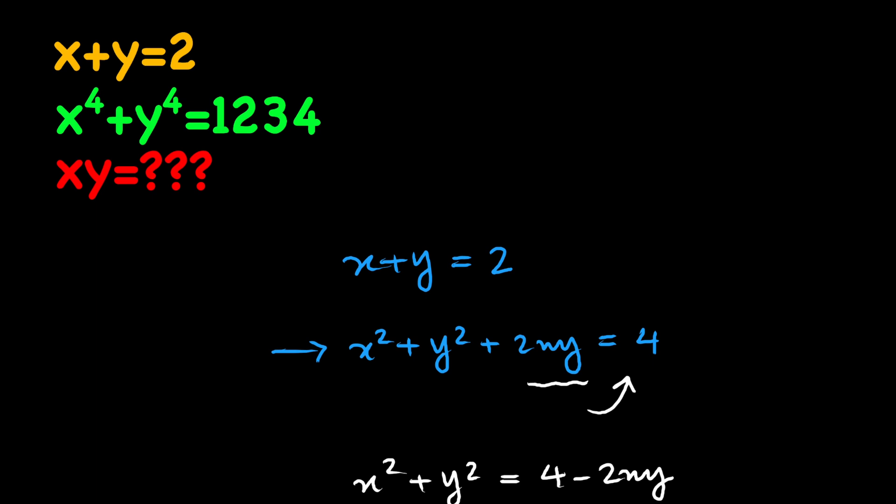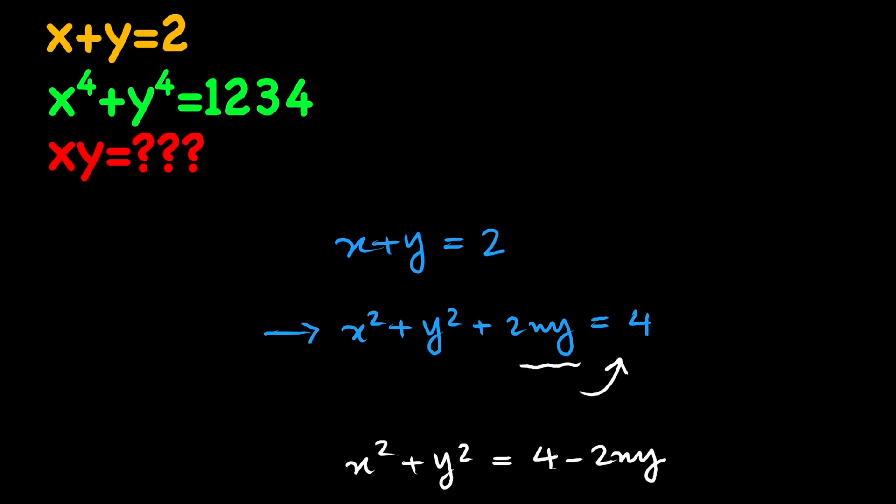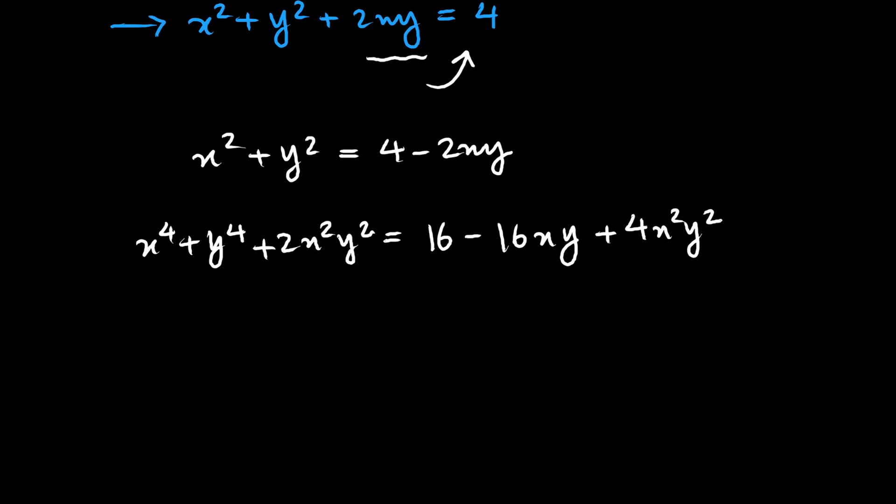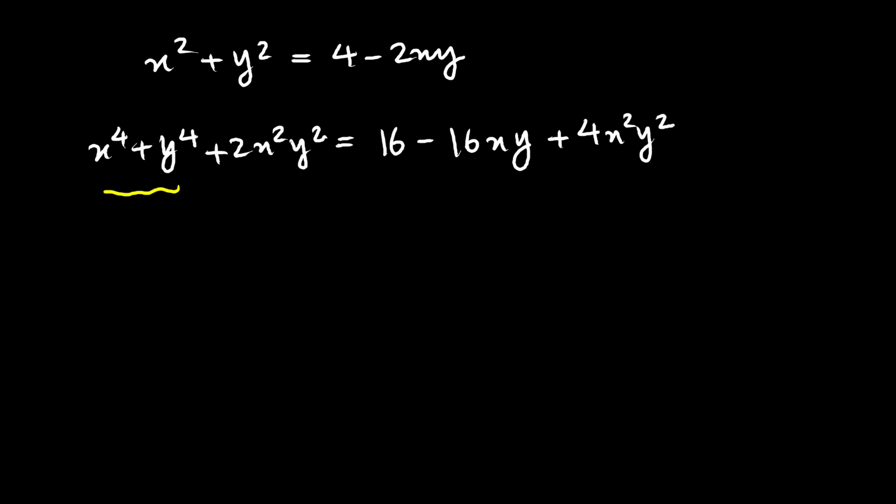Now, we know that x to the fourth plus y to the fourth is 1,234. So our equation is 1,234 plus 2 x squared y squared equals 16 minus 16xy plus 4 times x squared y squared.